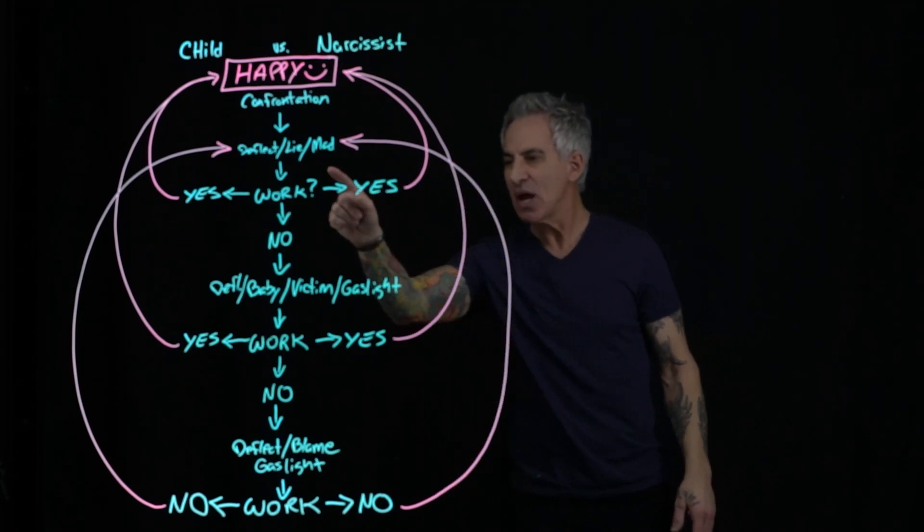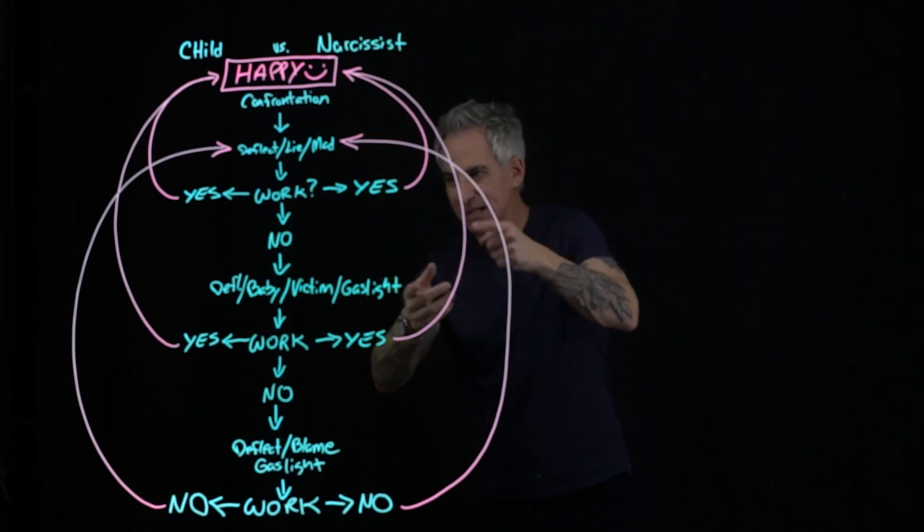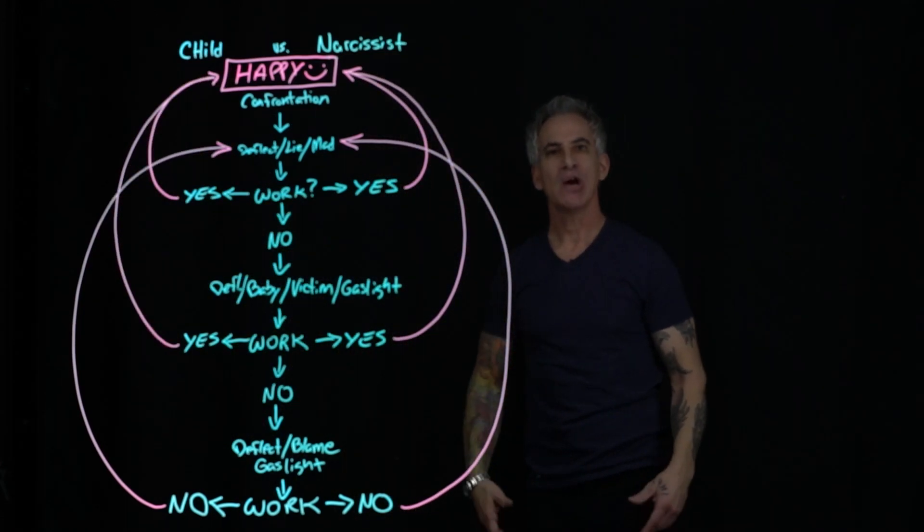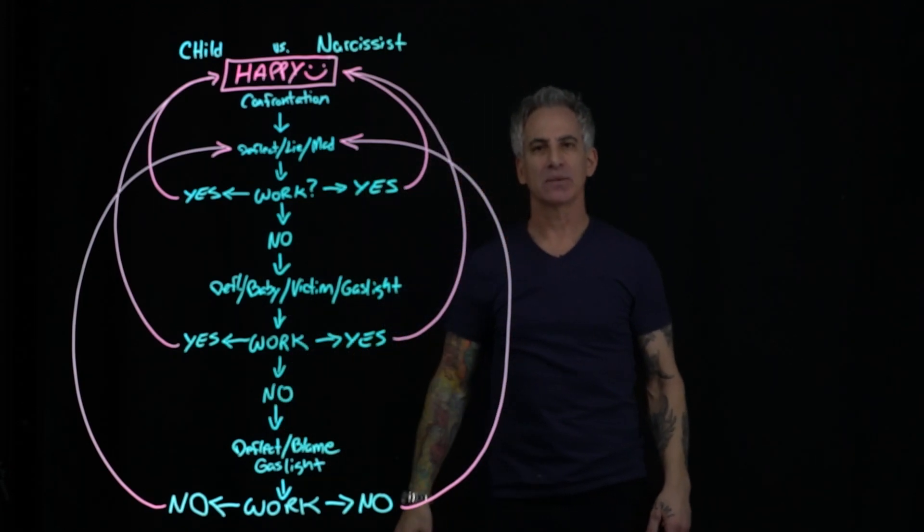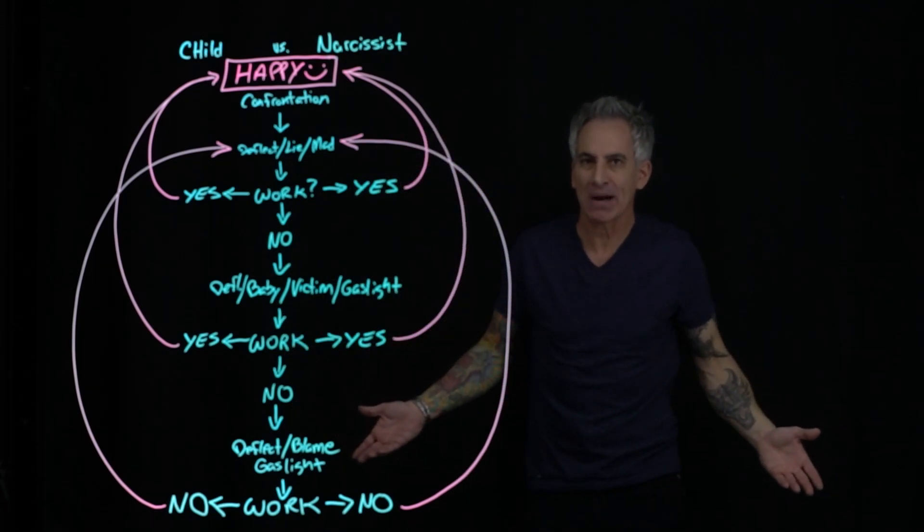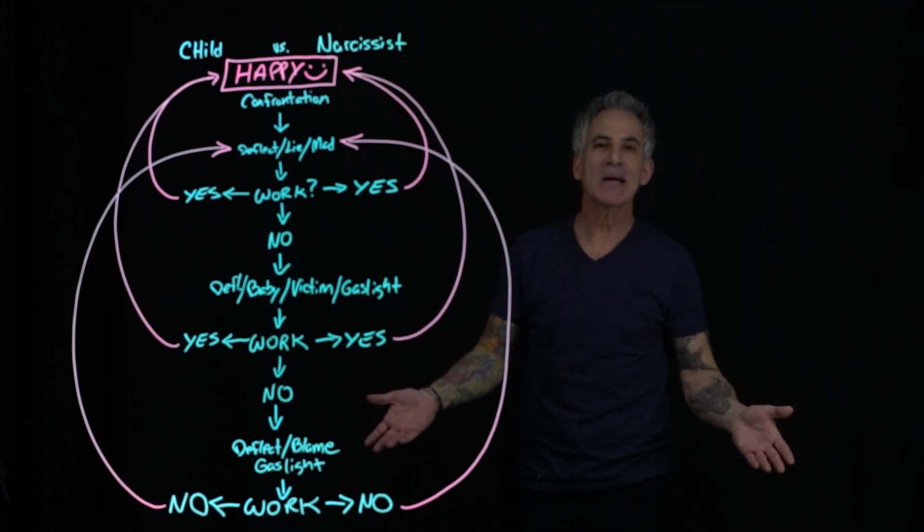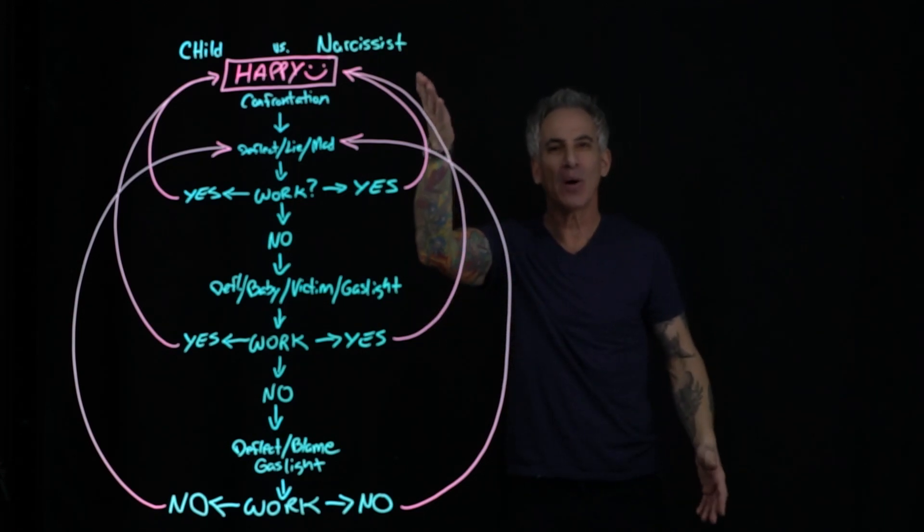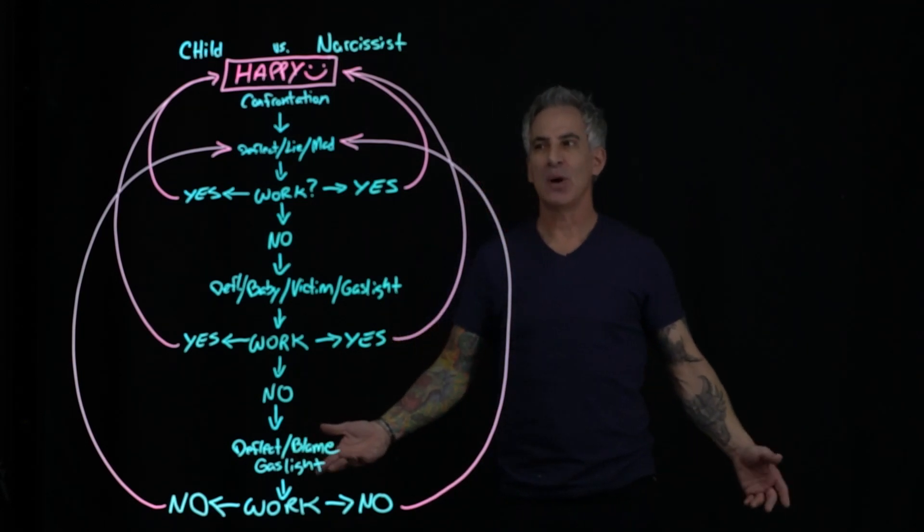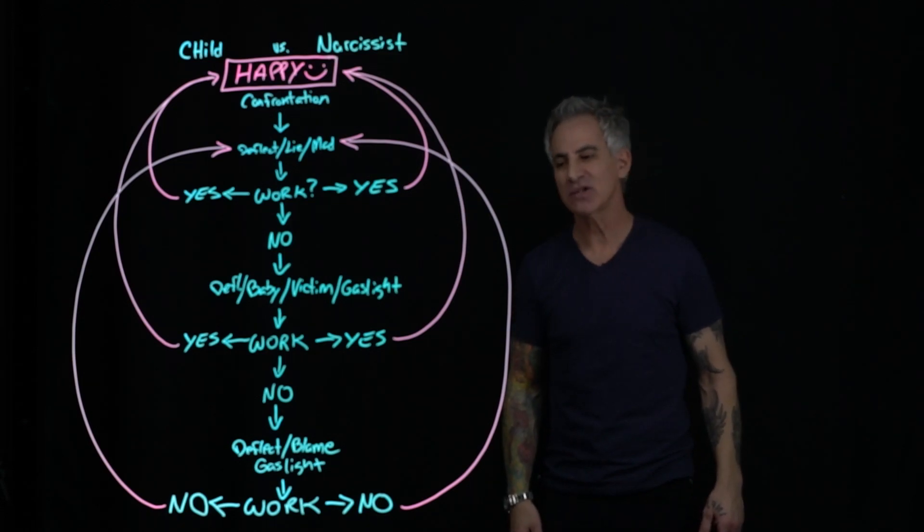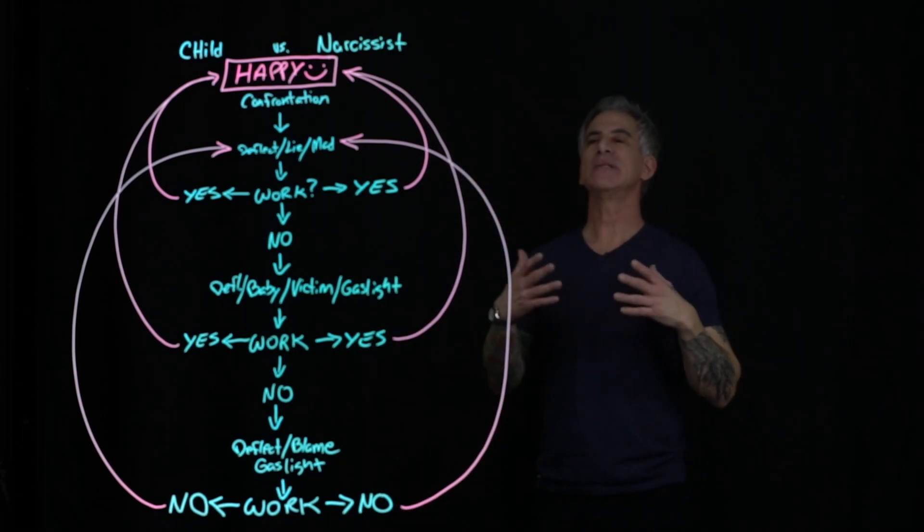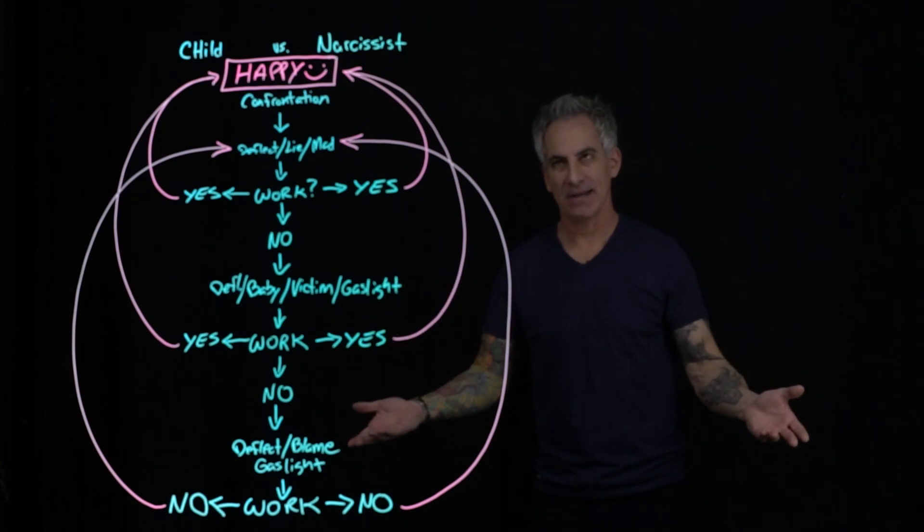So back to the flowchart. Basically what happens is second time around, confront them again. Second time around: deflect, baby, victim, gaslighting. Did it work? Yes it did. Boom, back to happiness. No, it did not work. Deflect, blame, shame someone else, gaslight. Put it back on the person because the child can't put it back on the adult. You know what would happen there? They're going to smack it in the face like I did from the age of 7 to 14, thus perpetuating the whole problem in and of itself with trauma and abuse. So did it work? No, it did not. Did not work again. So guess what? Goes back to the top and you have your cycle that will continue in infinity.